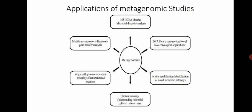Applications of metagenomic studies: the first is 16S rDNA-based libraries used in microbial diversity analysis, allowing identification of which microbial communities are present in various environmental categories. Second, DNA library construction for functional screening yields novel bioactive compounds of biotechnological importance. Third, sequence-to-amplification approaches identify novel metabolic pathways. By using metagenomic analysis, we can study the metabolic profile of a particular microbial community.